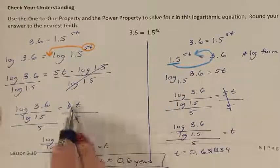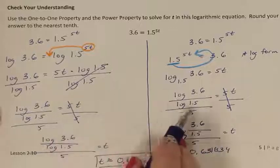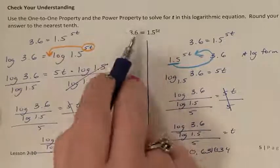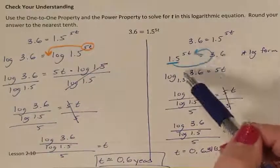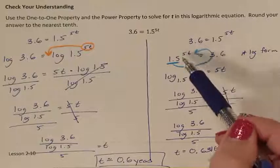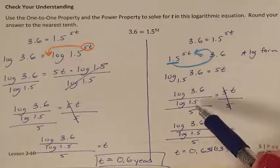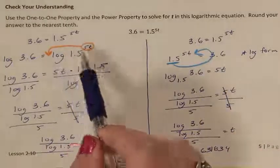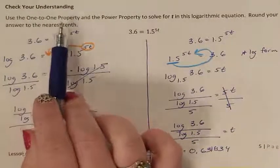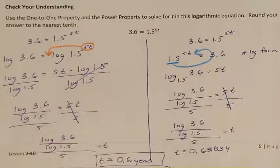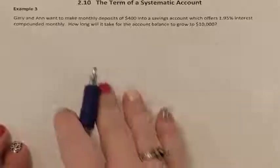Two different ways to solve the same exact problem: one has you convert from exponent form to log form, and the other has you use the one-to-one property and the power property.